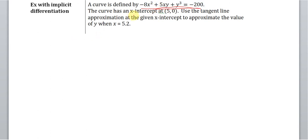And we know that it has an x-intercept at (5,0), so we want to use the tangent line approximation to approximate the value of y when x is equal to 5.2.